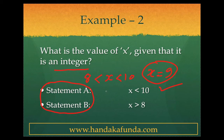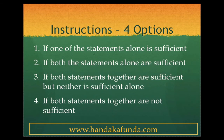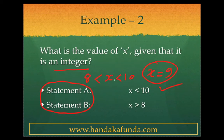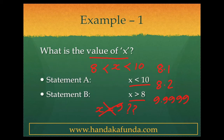Now let us look at some of the standard instructions. The four-option instructions are: mark one if one of the statements alone is sufficient; mark two if both statements alone are sufficient — that is, you can do it from statement A alone and B alone; mark three if both statements together are sufficient but neither is sufficient alone; and mark four if both statements together are not sufficient. Going back to the previous examples: in the integer case you would mark three, since you combined both statements. In the non-integer case you would mark four, since even after combining you could not solve it.